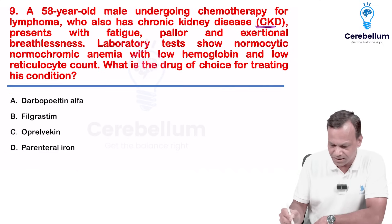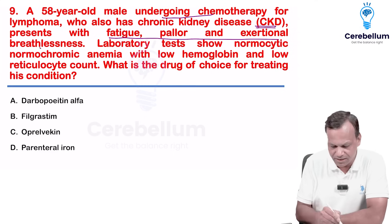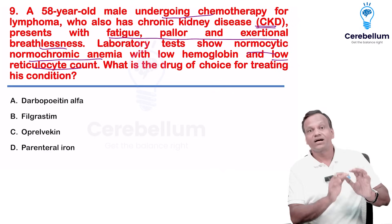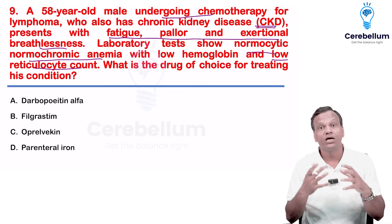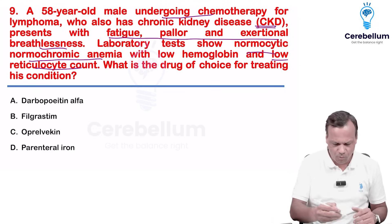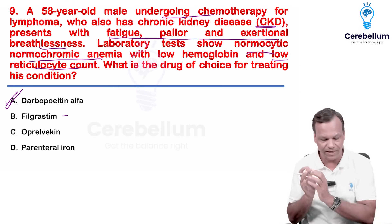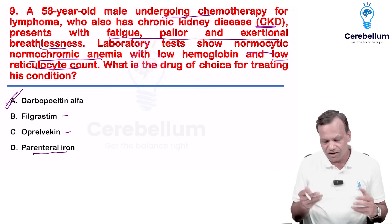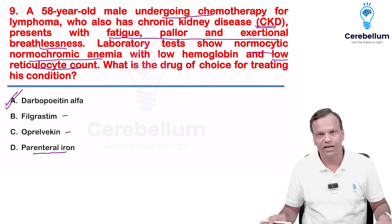A patient with chronic kidney disease undergoing chemotherapy presents with symptoms of anemia — fatigue, pallor, breathlessness — and shows normocytic normochromic anemia with low reticulocyte count, indicating bone marrow suppression from chemotherapy. The drug of choice for chemotherapy-induced anemia is erythropoietin, specifically darbepoetin. Filgrastim is a granulocyte stimulator used for leukopenia; oprelvekin (IL-11) is used for thrombocytopenia. Parenteral iron is not indicated as this is normochromic normocytic anemia. The answer is darbepoetin.